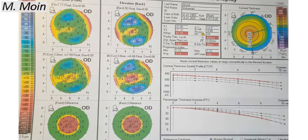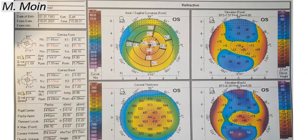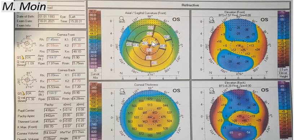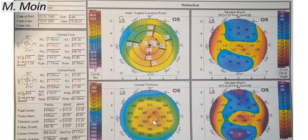Now looking at the left eye: the Kmax is 58, which is high; the pachymetry at the thinnest point is 433 microns; and the astigmatism is even higher than the right eye, indicating more advanced disease on this side. The elevation map shows a central cone — a yellow and red island surrounded by green. The front elevation at center is plus 18, and the back elevation is plus 39, well above the threshold for a slightly myopic patient. The pachymetry is 442 microns, with the thinnest location displaced slightly inferiorly and temporally, as is typical in keratoconus.